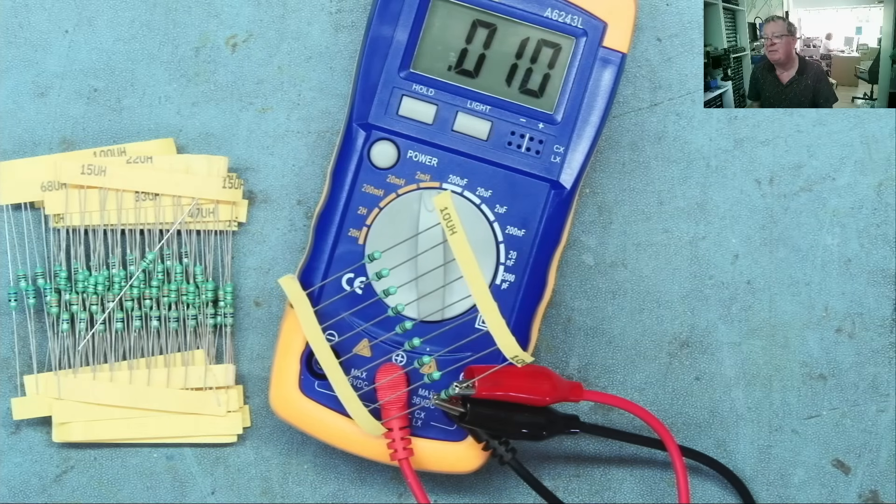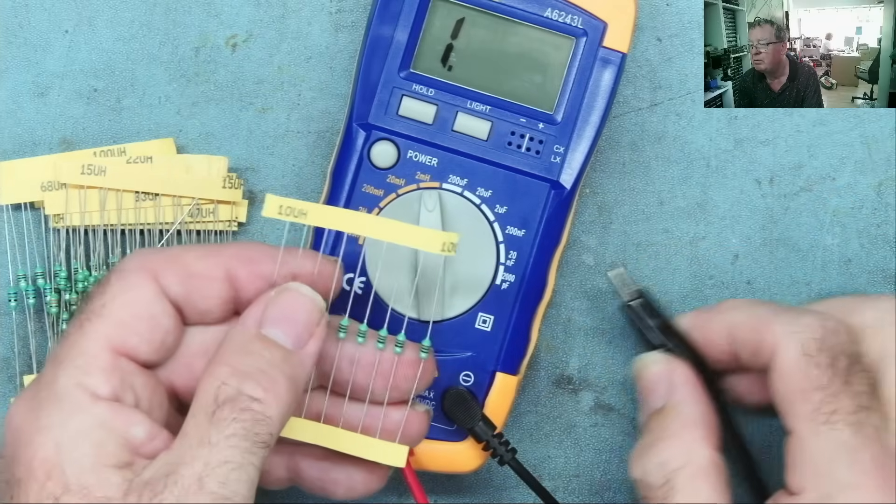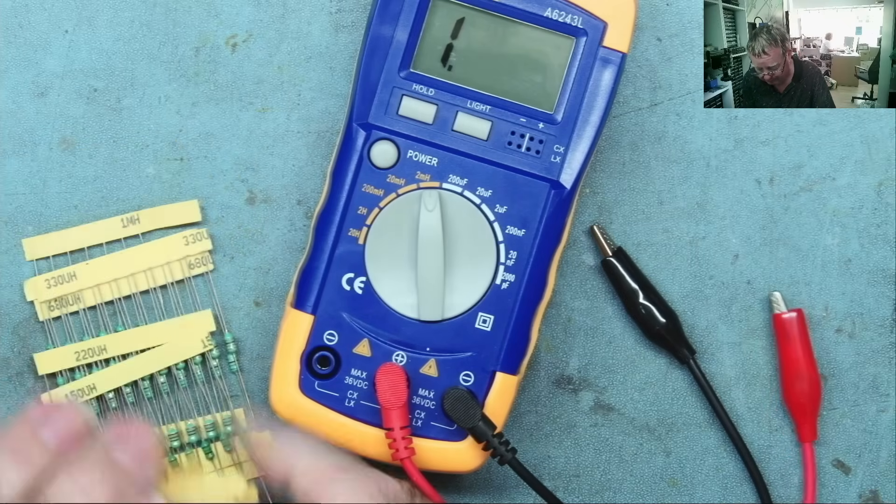We'll skip the 8.2. Let's go straight for the 10 microhenries. And now we're getting a reading which is close. So 10 microhenries seems to be the smallest it will actually read consistently.